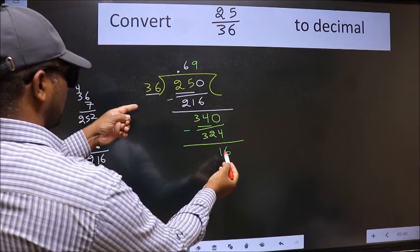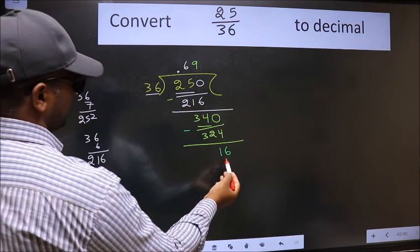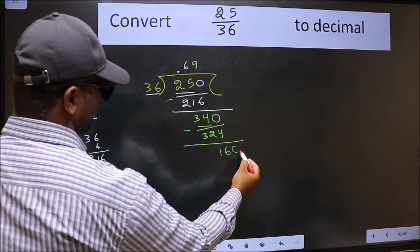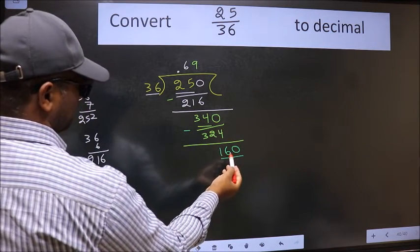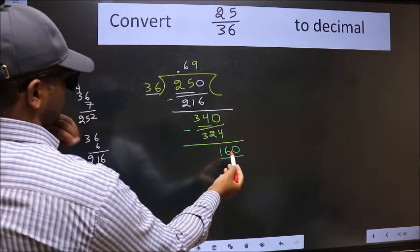16 smaller than 36. And we already have the decimal. So directly take 0. So 360. A number close to 360 in 36 table is,